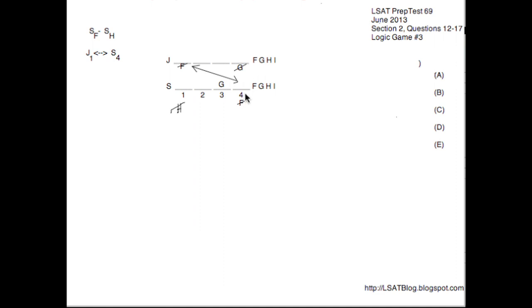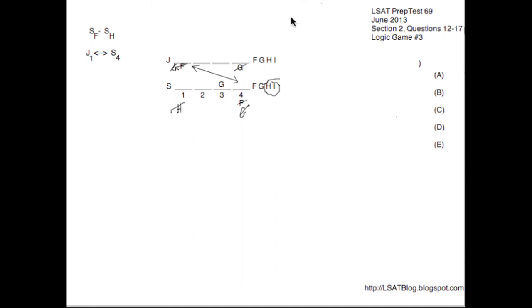S4 is not getting F, and S4 is also not getting G because G is already on S3. So if S4 is not getting G, that automatically means J1 is not getting G either, since whatever happens on S4 happens on J1. We've got variables F, G, H, and I — if neither F nor G goes to S4 or J1, that only leaves H and I for those spaces. So we can make two different main diagrams: one with H on S4 and J1, another with I on S4 and J1.